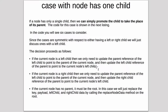We'll see a diagram which will make this easier to understand. So the current node is the one we're deleting. If it's a left child, then we only need to update the parent reference of the left child to point to the parent of the current node, and then update the left child reference of the parent to point to the current node's left child. We're basically skipping around the node we found on the left side and changing the parent reference of the child to point to the node's parent that we're deleting.